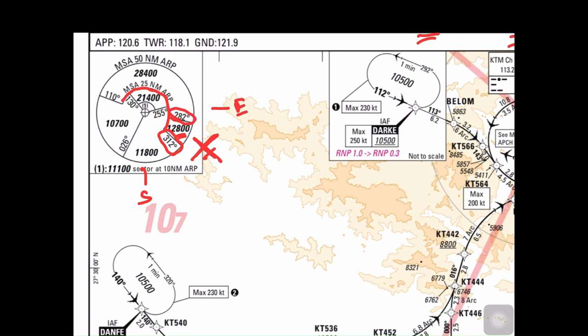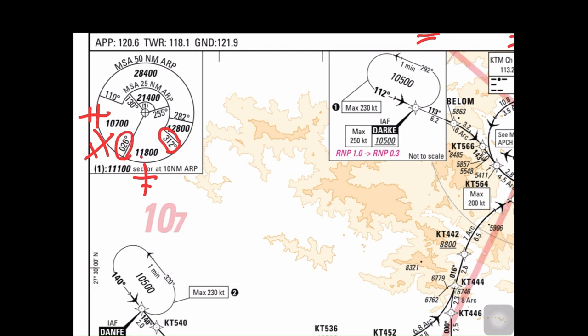If flying from the south or southwestern sector, between headings 312 and 006 degrees, you have to fly at 11,800 feet until reaching the inner circle. From the southwestern part of the aerodrome, you should be at 10,700 feet, and from the western part, also 10,700 feet, until reaching the center circle.